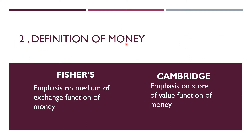The next difference is the definition of money. In Fisher's case, emphasis is placed on the medium of exchange function of money — money used for transactions of goods and services. The Cambridge approach lays more stress on the store of value function, focusing on money held for non-transaction purposes — money not spent on goods and services.